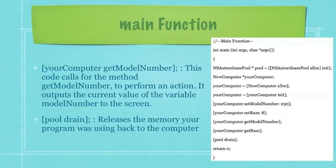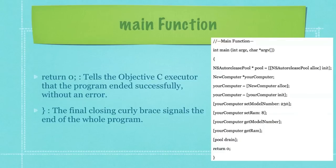And then finally, pool drain releases the memory your program was using back to the computer. Return zero, as I previously described, tells the Objective-C executor that the program ended successfully without an error. And the final closing brace signals the end of the entire program.